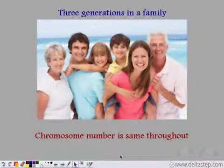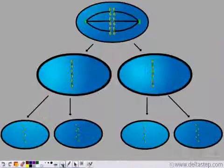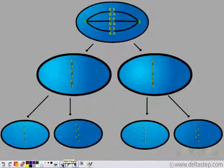Now see the chromosome number is same throughout all these three generations. And this constancy of chromosomal number is possible because of the reductional division or meiosis.